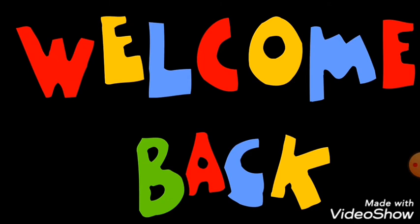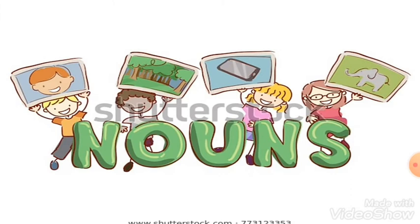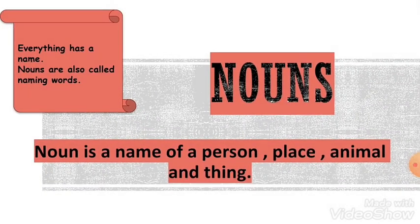In the last session we had learned about nouns and a type: common noun. So, what is a noun? Noun — yes students — noun is a name of a person, place, animal or thing. And students, remember that if the name is not of a person, place, animal or thing, then it will not be a noun.